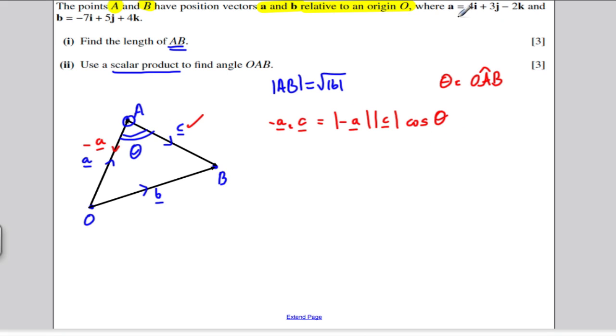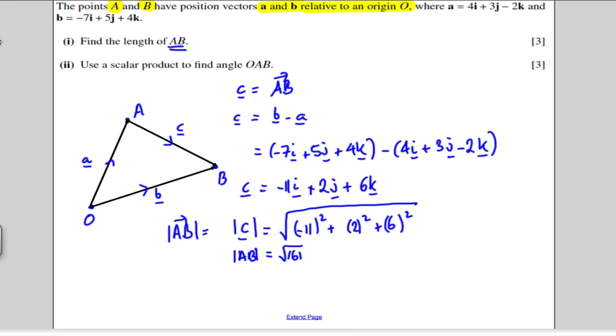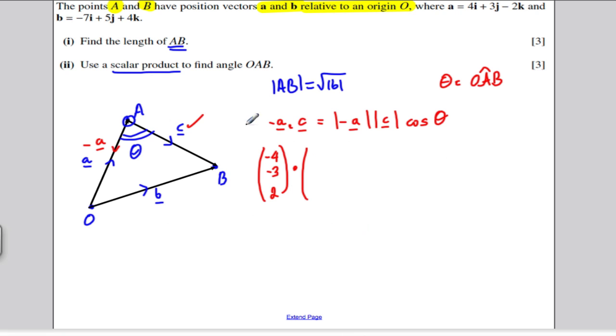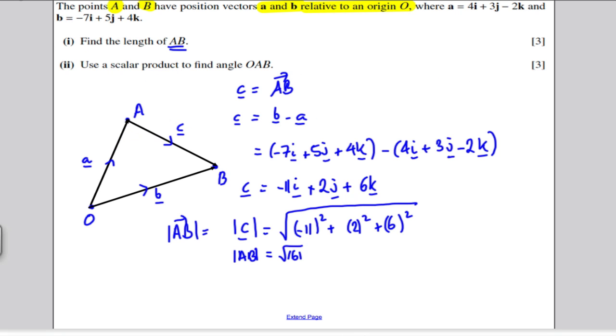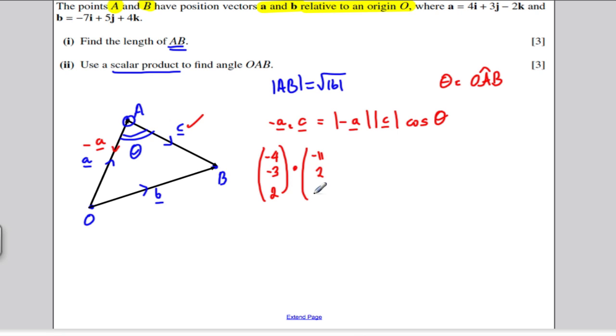Well, what is minus A? I'm going to change everything to column vectors. It just makes things slightly easier for me. So that was 4I, 3J, and 2K. So that's minus 4I, minus 3J, and positive 2K. And then vector C, I've already written what vector C was on the previous page. Vector C was minus 11I, 2J, and 6K. So 2J and 6K.